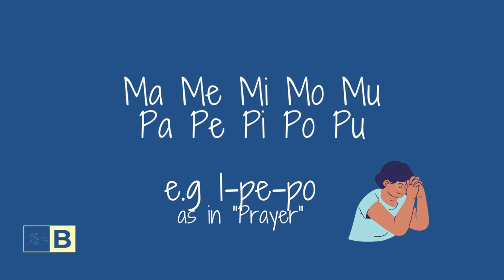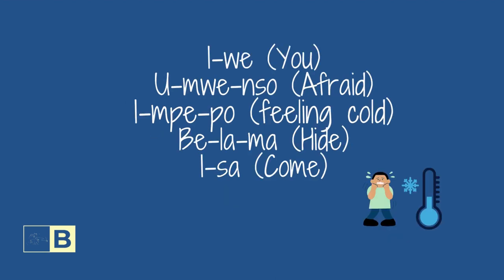Let us try out some more examples in order to become more confident. I, Pe, Po — as in 'you' in English. I, Pe, Po — as in afraid. I, Pe, Po — feeling cold. Better Ma — to hide. Isha — to come.